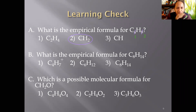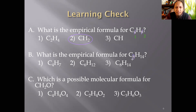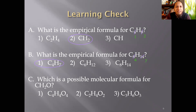Next example: What is the empirical formula for C8H14? Both are even numbers, so you can divide by 2: half of 8 is 4, and half of 14 is 7. There's nothing else to simplify after that, so the empirical formula is C4H7. That's the smallest version.